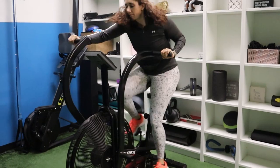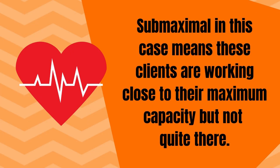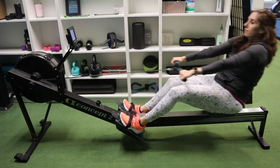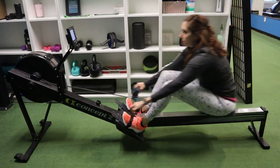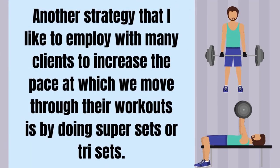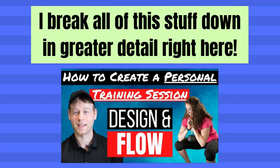I'll also fairly often include sub-maximal sprinting activities on things like the rowing machine or airdyne bike within my sessions. Sub-maximal here means clients are working close to their maximum capacity — say an eight to nine out of ten on the intensity scale. An example I use often is 10 seconds slow on the rowing machine, enough time to get into their groove, followed by 40 seconds of fast rowing — doing two or three sets just like any other exercise. Another strategy to increase the pace of workouts is using supersets or tri-sets, which can be beneficial with average clients. I break all of this down in greater detail in a separate video.